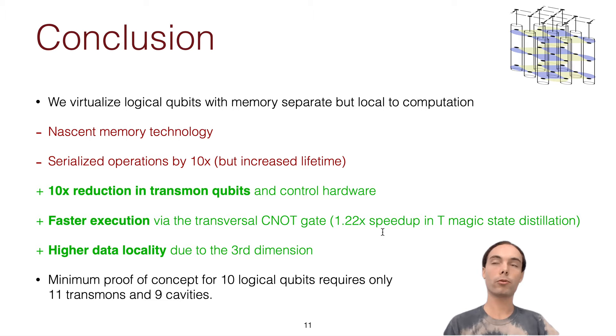And so we hope this work motivates further experimental efforts and prompts industry to adopt and scale up this architecture. And the smallest proof of concept of this that can give you 10 logical qubits requires only 11 transmons with 9 cavities. Thanks.